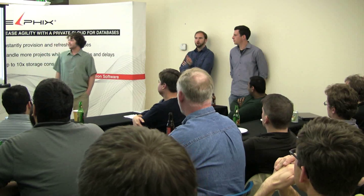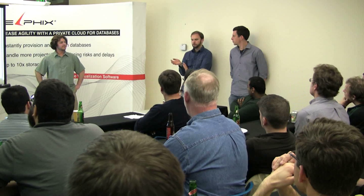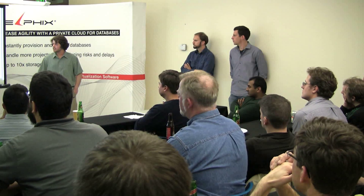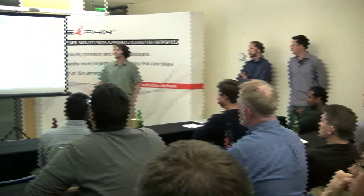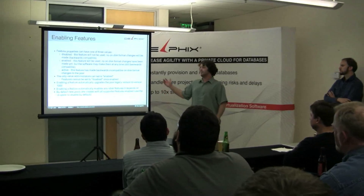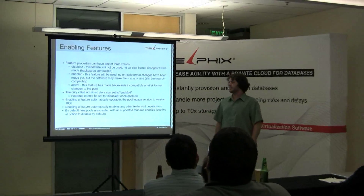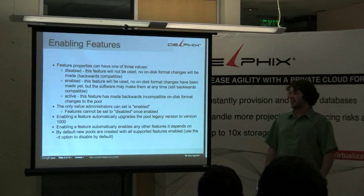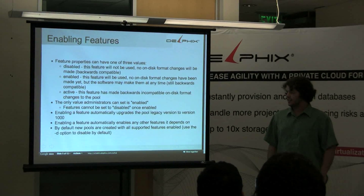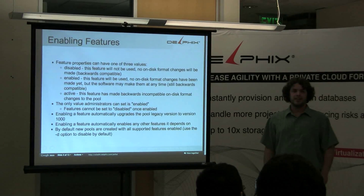Most properties and most of the features we've implemented could have been read-only backwards compatible, and we can do that with feature flags as well. You can't set features to disabled currently, though we might want to change that. When you enable a feature on the command line, it automatically sets the pool version to 1,000. It also automatically enables any dependencies.